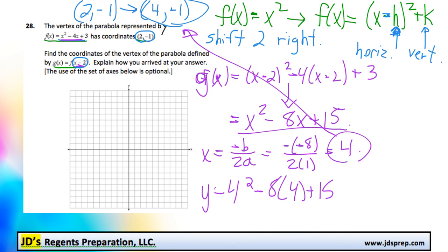This is to find the y value. And by doing that, you would get negative 1. So, the point is 4 negative 1.